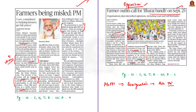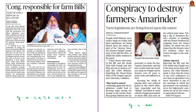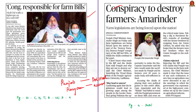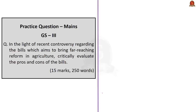Two hotspot states strongly against the passing of these three bills are Punjab and Haryana, where the agitation has reached even the political level, with ruling party and opposition leaders accusing each other. This is in brief about the discussion of all news articles related to the passing of three farmers-related bills in Lok Sabha. Try to know about the pros and cons of these three bills from the Mains perspective.